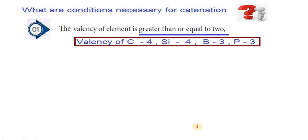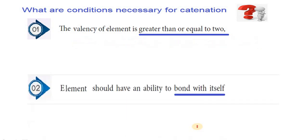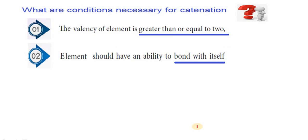Therefore, only carbon, silicon, boron, and phosphorus show catenation property. Point number two. Element have an ability to bond with itself. Carbon bonds with carbon. Silicon bonds with silicon. Disilane. Then, sulfur bonds with sulfur. Example for sulfur bond sulfur is disulfur dibromide. Similarly, we have phosphorus bond phosphorus. Boron bonds with boron. I hope that second point can be understood.